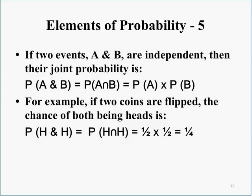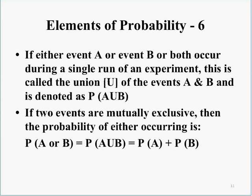Going back to the coin example: if two coins are flipped, the probability of both being heads equals P(head) × P(head) = one-half times one-half equals one-quarter. If either event A or event B, or both, occur during a single run of an experiment, this is called the union of A and B, denoted P(A ∪ B). If two events are mutually exclusive, then P(A ∪ B) equals P(A) plus P(B).